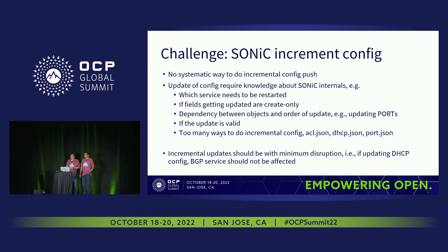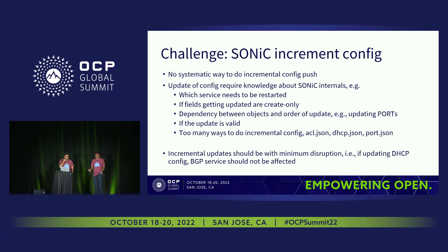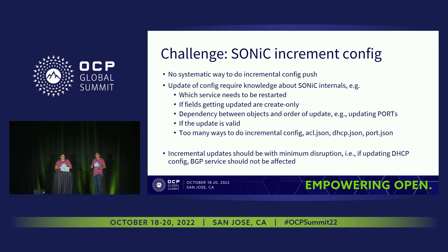So the challenges we faced here: if you think about the Sonic incremental config, there is no systematic way to do incremental config push recurrently. The main blocking thing for us is how we need to know the Sonic internals — the dependencies between services, whether any field is created only, the order dependency. For example, if you want to remove a port, we need to make sure the ACL is removed first, so there are dependencies there.